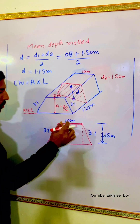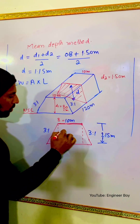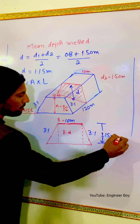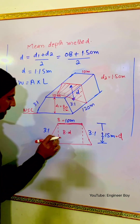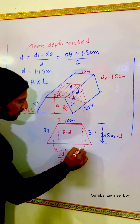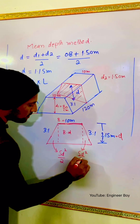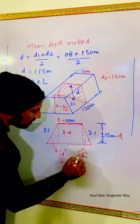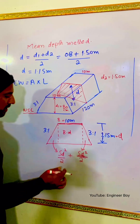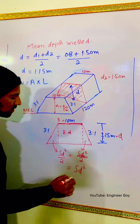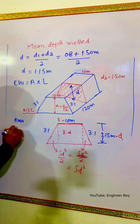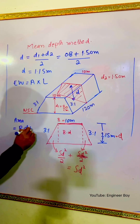We split the diagram into a rectangular portion and two triangular sides. The rectangular portion is B×D, where B is the formation width. For the triangular sides, each gives SD²/2, and since both side slopes are equal, they combine to give SD². So the total cross-sectional area = BD + SD².